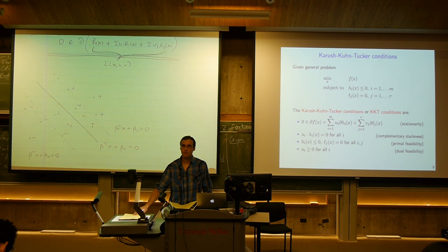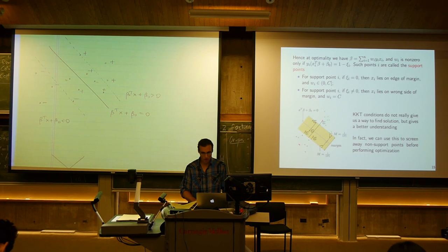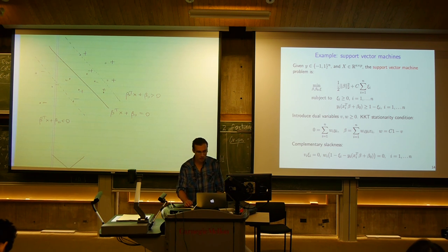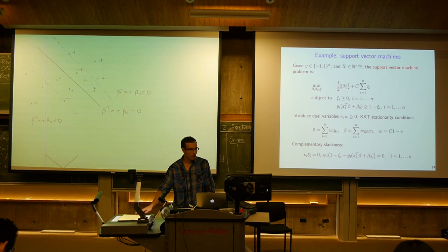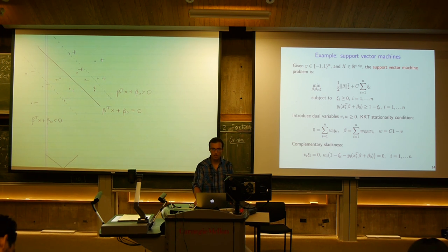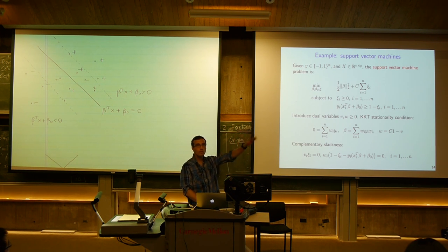Let's talk about support vector machines. The KKT conditions are actually fairly useful and interesting for SVMs. We have points labeled either minus one or plus one with associated features, and the SVM problem tries to find a hyperplane that separates all points labeled minus one from those labeled plus one with the largest possible margin, allowing for some slack.